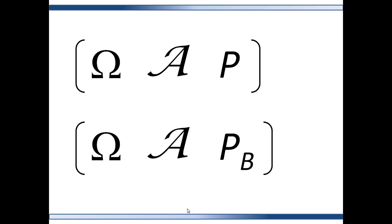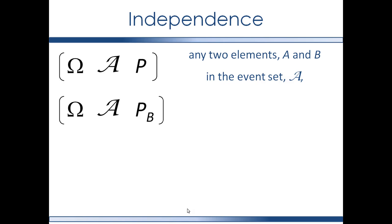So here you have two probability spaces. The outcome set is the same and the event set is the same between the two probability spaces. The only difference between these two is one of them contains a conditional probability measure — it is a probability measure conditional on B. Now say you have two elements or events in the event set; let's call these two events A and B. Since the event set is the same in each of these probability spaces, then the two events will be in both event sets.